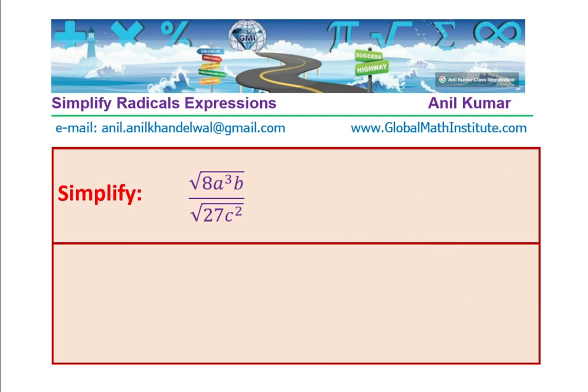So, now, let us see how do we simplify this. So, let me rewrite the whole expression. We need to simplify square root of 8a³b divided by square root of 27c².